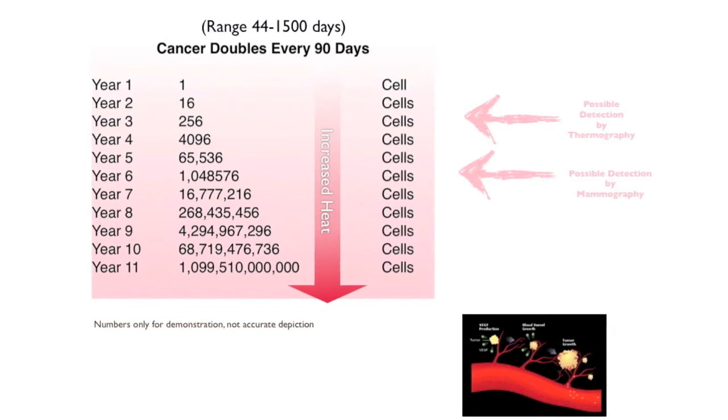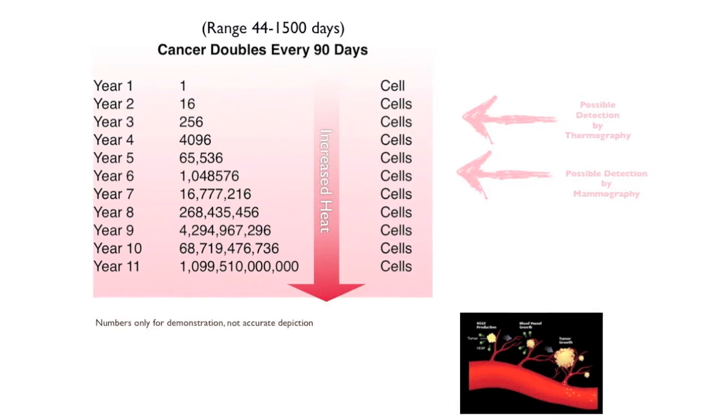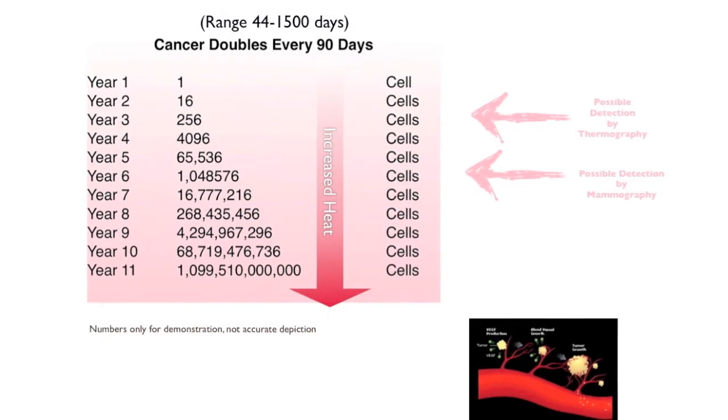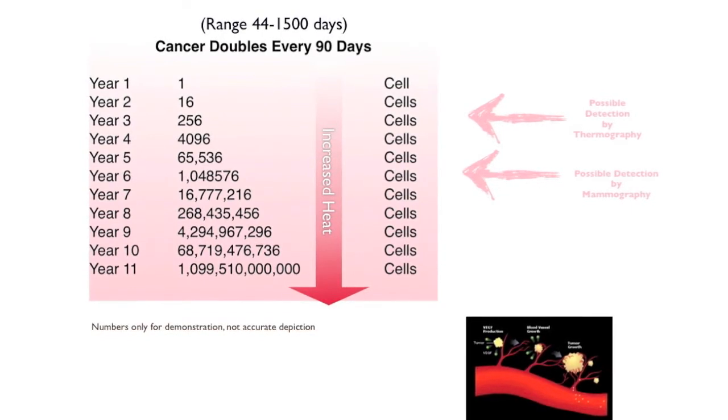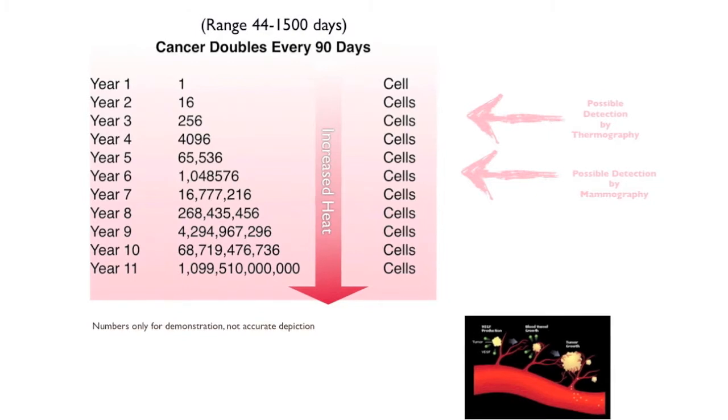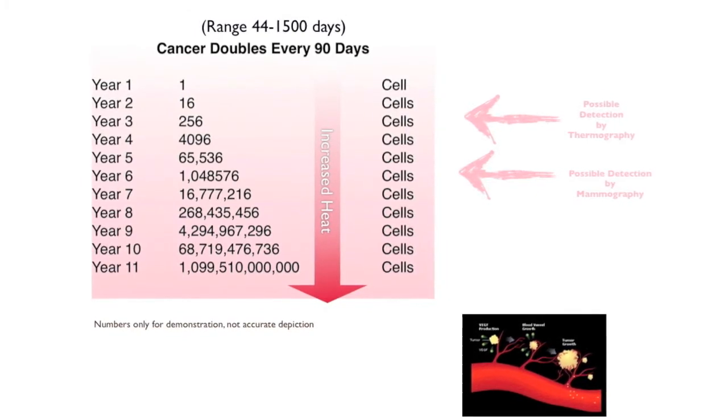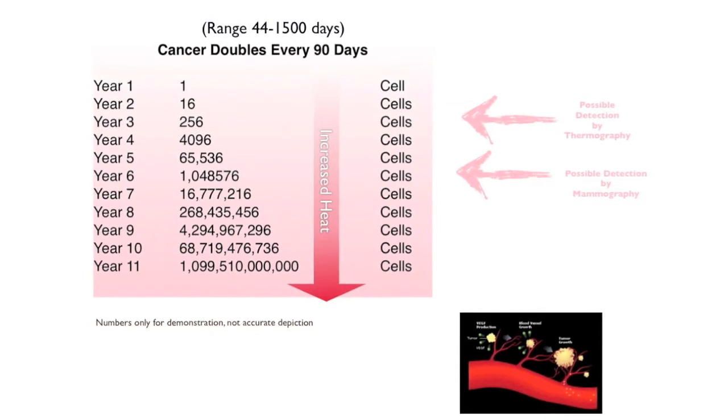If you look down by year 10, we have 68 trillion cells. This is obviously more cells than there are in the whole human body. In other words, a cancer that's doubling every 90 days would not have a survival rate past 10 years. It would be impossible. They would take over the entire body.